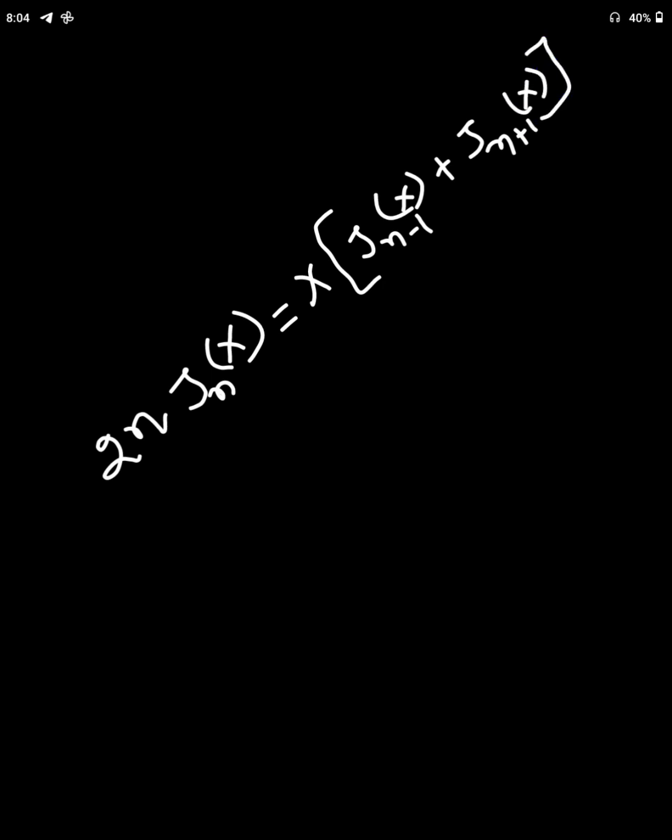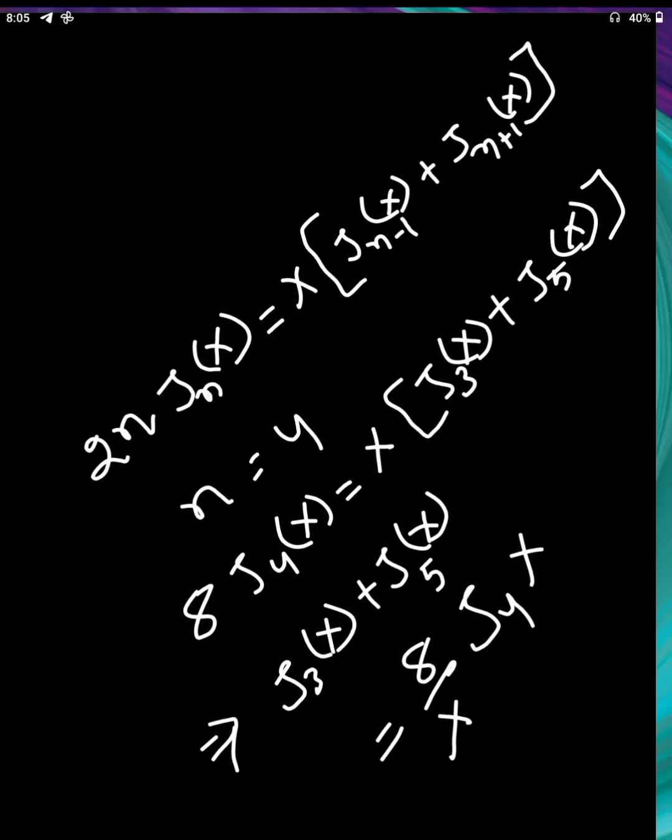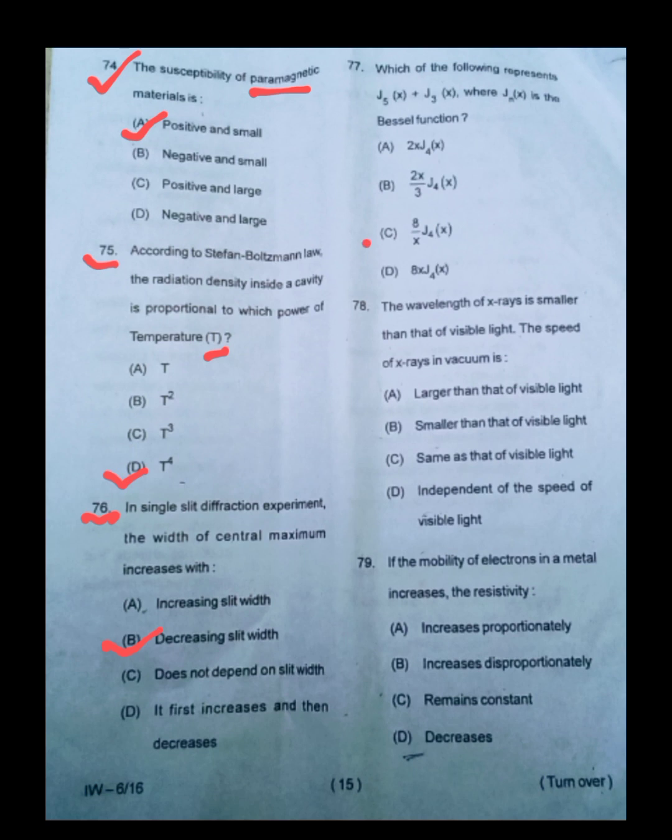If we consider n as 4, it is 8j4x will be equal to x times j3x plus j5x, which is the question. So answer is option number C, 8 by x, j4x.